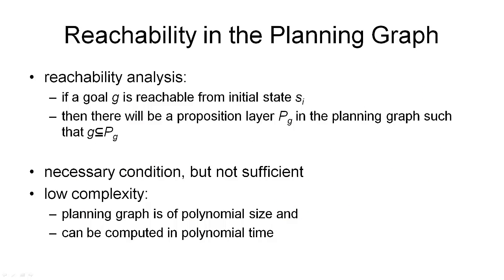Earlier I talked about reachability — reachability of goals and of individual propositions in a goal. We will now look at what the planning graph tells us about reachability. If a goal G is reachable from the initial state SI, then there must be a proposition layer PG in our planning graph such that all the goal conditions — all nodes representing those goal propositions — are a subset of that layer PG.